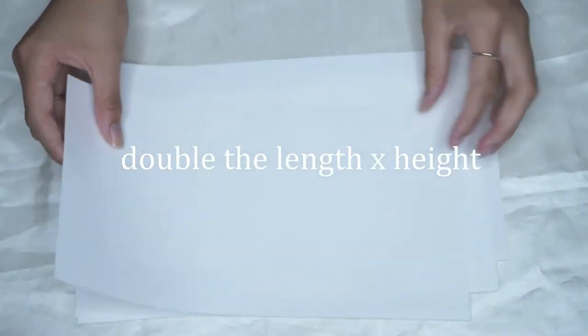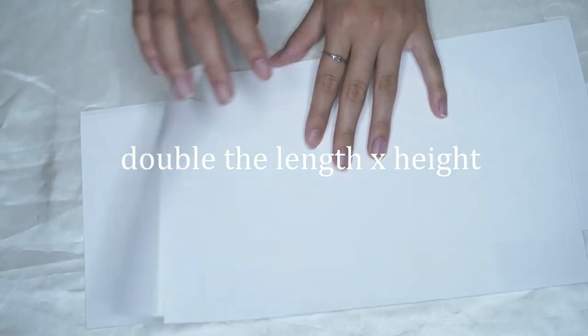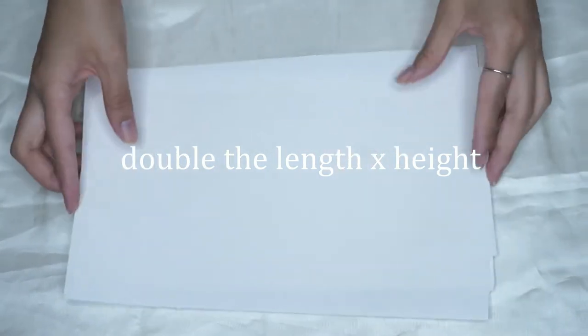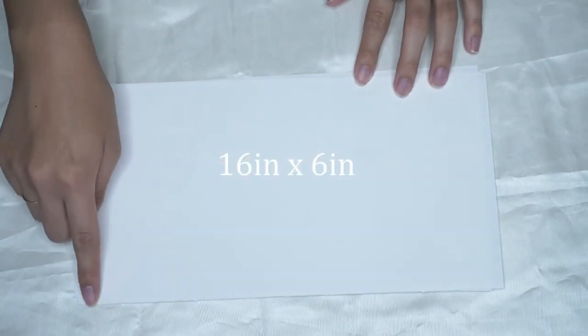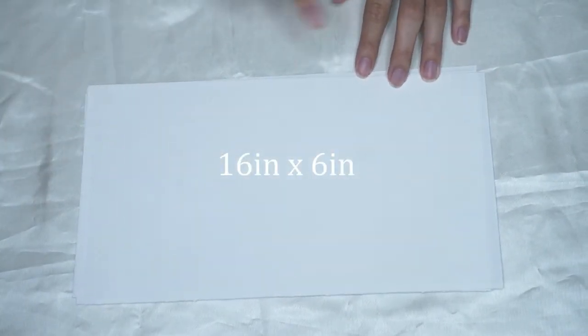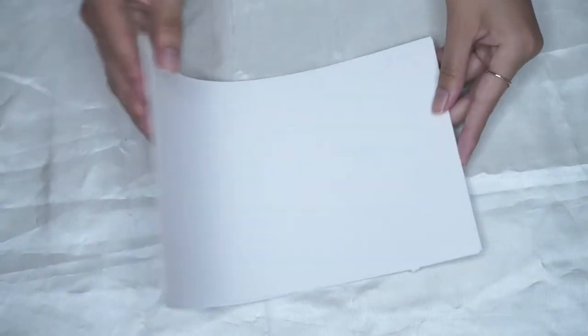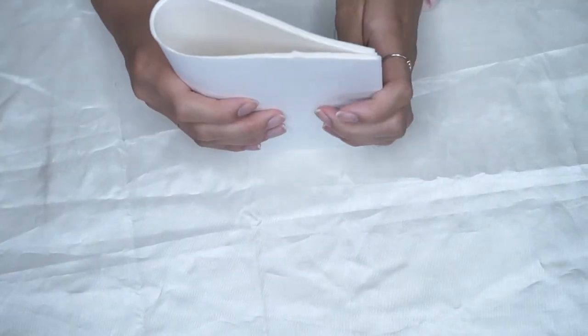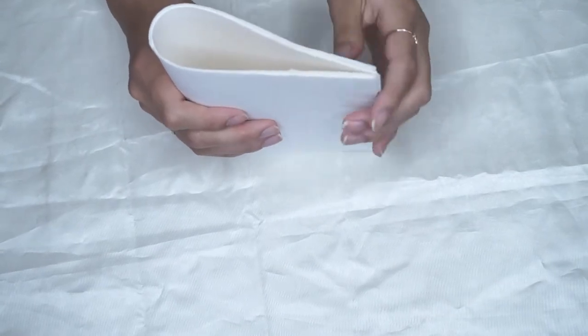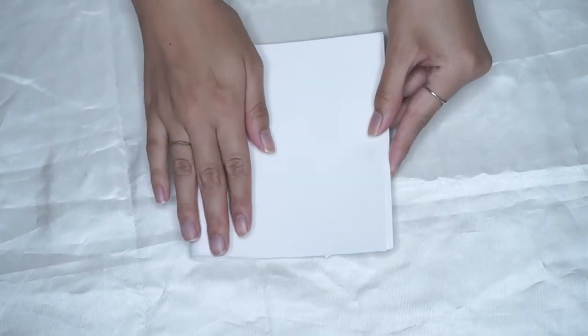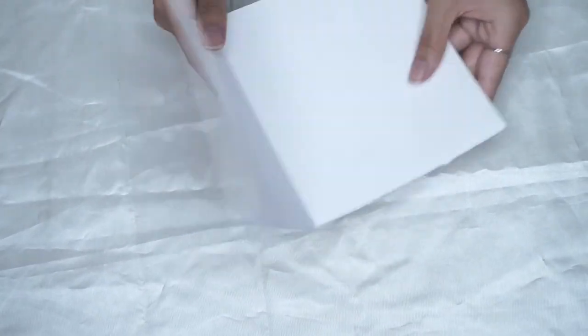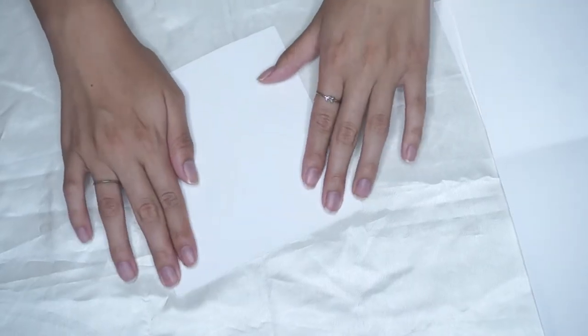Starting off with your paper, you're going to cut it to your desired size. You want to double the length that you would like your final notebook to be by the height. So I want mine to be 8 inches, so I'm going to cut out 16 inches by 6 inches. Then just fold your paper in half, all of them in half, and I'm also individually folding them just to make sure they're really nice and crisp.